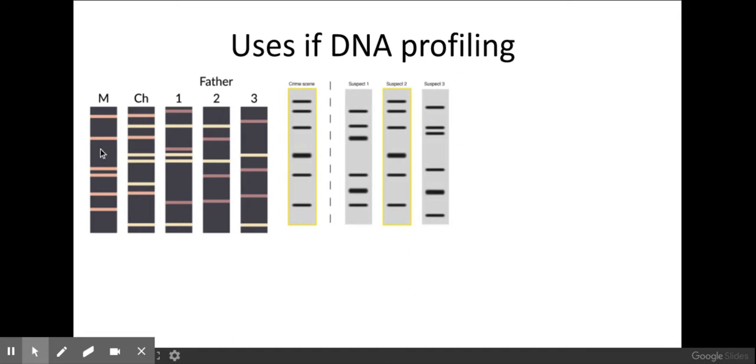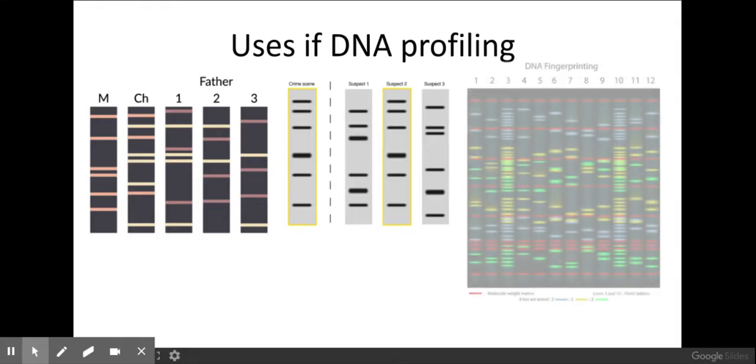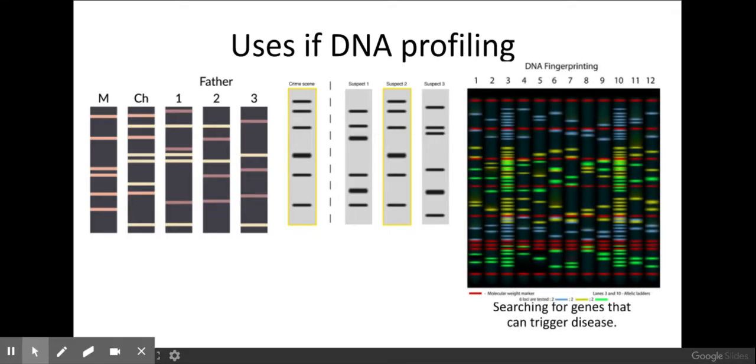We also can do the same for crime scenes. So this was the DNA found at the crime scene and these were the suspects. So again you can do DNA profiling that. And the last one you can do it for is searching for genes that can trigger diseases.